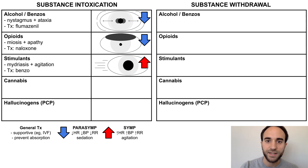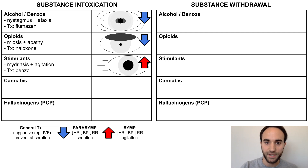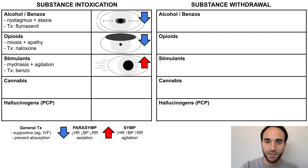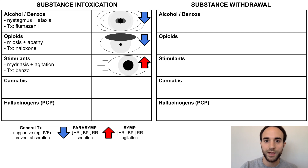Stimulant intoxication, such as with cocaine or methamphetamine, involves mydriasis, or pupil dilation, and agitation. Sympathetic activation leads to vital sign elevation. There is no specific antidote, but benzos can help calm the associated agitation and sympathetic activation.